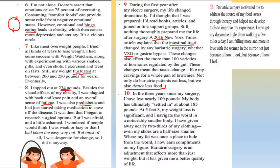In the three years since my surgery, I have lost 100 pounds. My body has ultimately settled at about 185 pounds. At 5 feet 8, my weight loss is significant, and I navigate the world in a noticeably smaller body. I have given away nearly two-thirds of my clothing — even my shoes are a half-size smaller. Bariatric surgery is an adjustment that affects more than just weight, but it has given me a better quality of life. It motivated me to address the source of my food issues through therapy. I now get my dopamine highs from walking a few miles a day, and I'm falling more in love with the woman in the mirror.